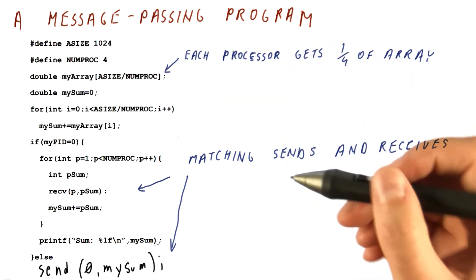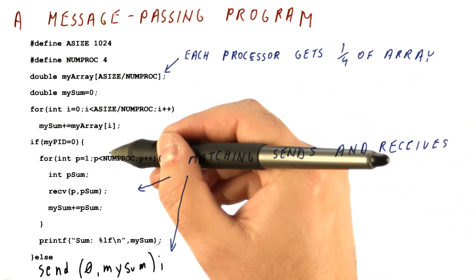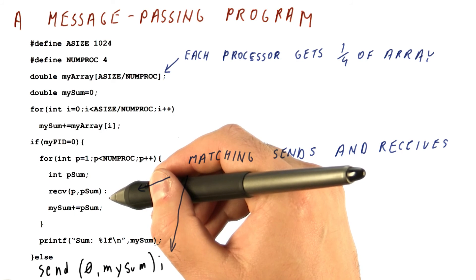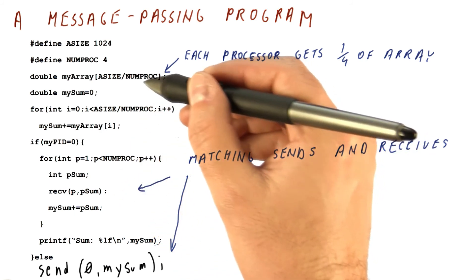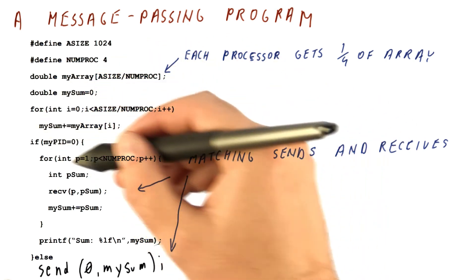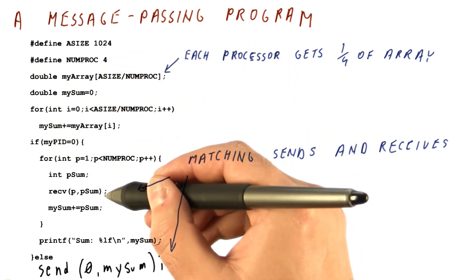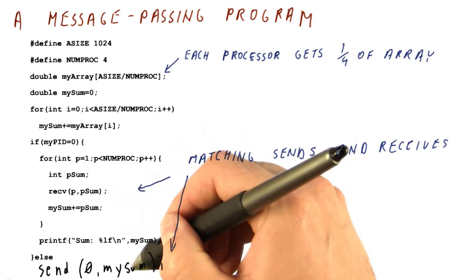But once we do all of this correctly, it's very easy for the programmer to see which parts of this program are going to be expensive as far as communication is concerned. Because these are all local accesses, so they're relatively fast. And these are the only places where we actually communicate.